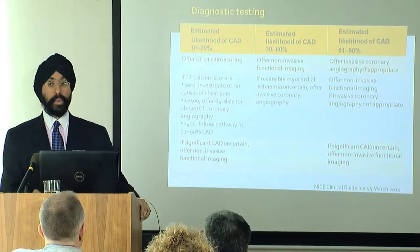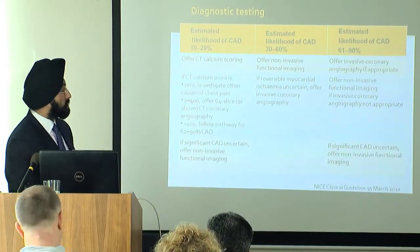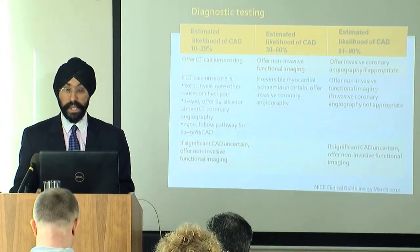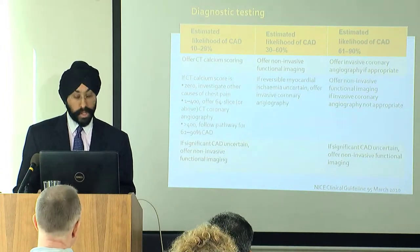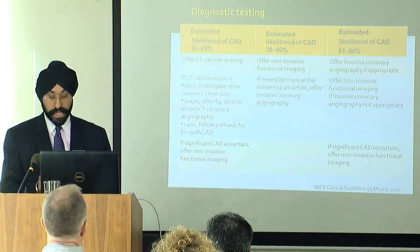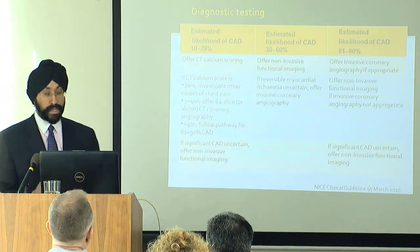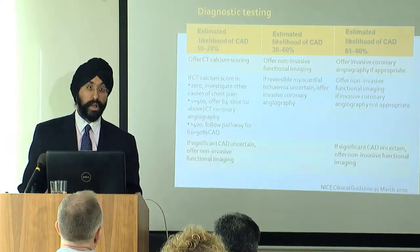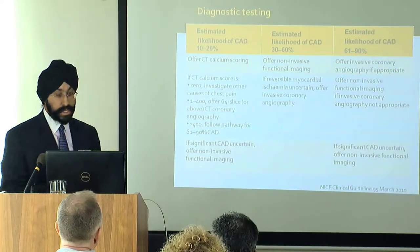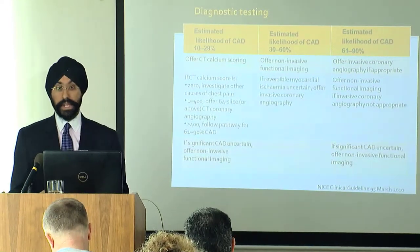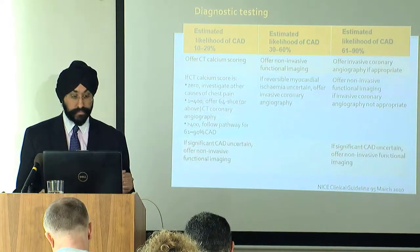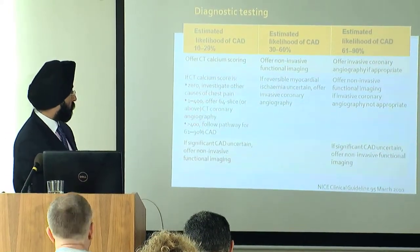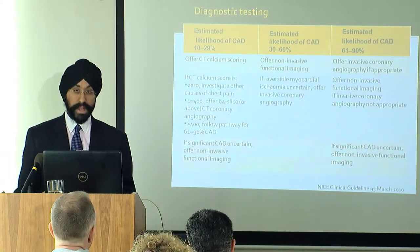When we work out whether the pretest probability is low, intermediate, or high risk, that helps identify the next test for our patients. At a low to intermediate pretest probability of 10 to 29%, the first thing we're meant to offer is a CT calcium score, which shows whether there's any calcification in the coronary tree. If that calcium score is raised, we progress on to CT coronary angiography — if it's between 1 and 400, we go on to a CT coronary angiogram with at least a 64-slice scanner.